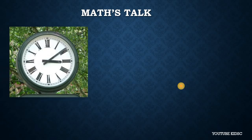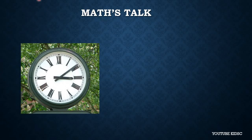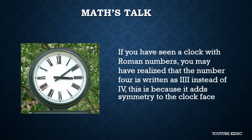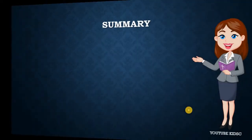Let's have some math talk. This is a clock with Roman numerals. You may have noticed that the number 4 is written as IIII instead of IV on clocks. Do you know why? This is because it adds symmetry to the clock face. The clock also has symmetry, so writing IIII adds symmetry to the clock face.